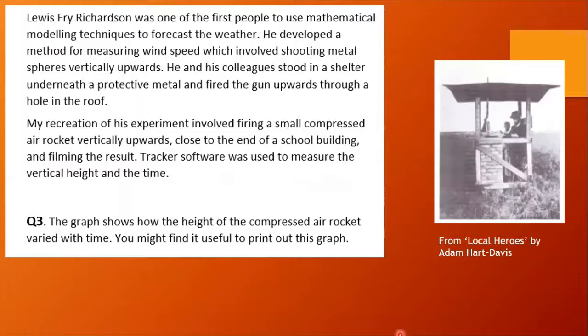Now Lewis Fry Richardson was one of the first people to use modeling techniques to forecast the weather. He developed a method for measuring wind speed which involves shooting metal spheres vertically upwards. And of course what goes up must come down. He and his colleagues stood in a shelter underneath a protective metal screen and fired the gun upwards through a hole in the roof, and you can see the photograph here from Local Heroes by Adam Hart-Davis.